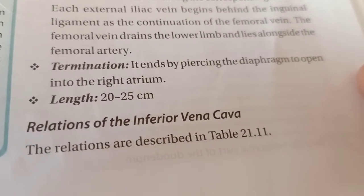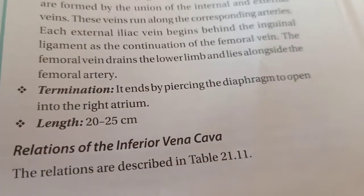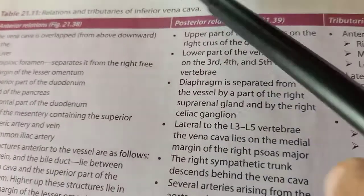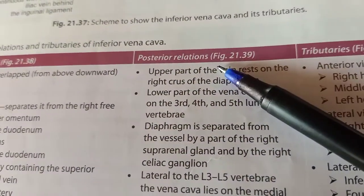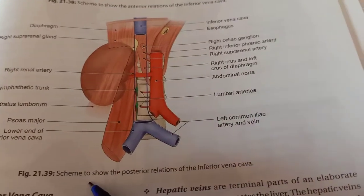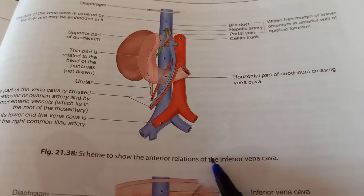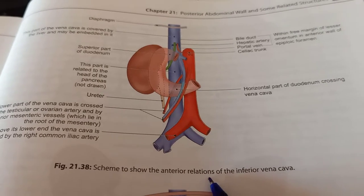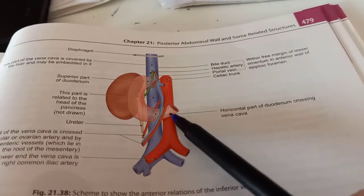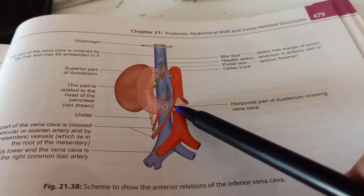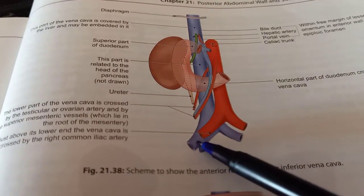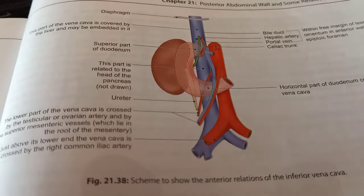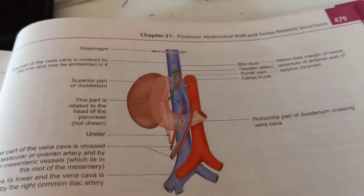Now we will see what are the relations of the IVC — which structures are related to it as it runs through. There are anterior relations of IVC and posterior relations of IVC. Here there is a diagram showing the anterior relations. What are the structures which are anteriorly related to IVC? This is your inferior vena cava, and we will see the structures present anteriorly.